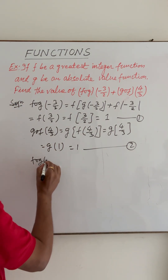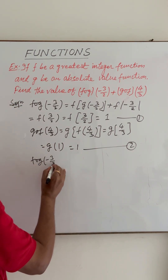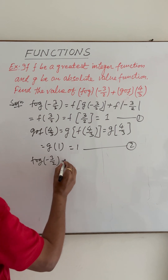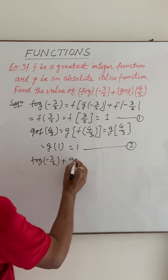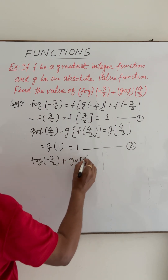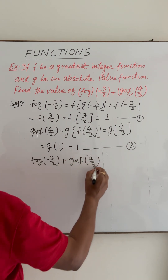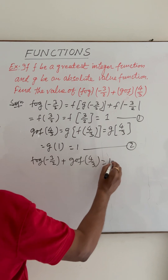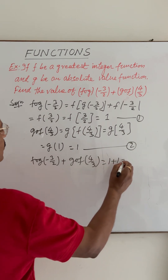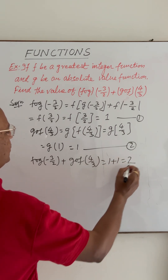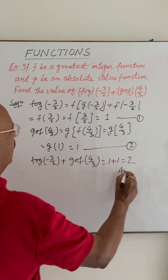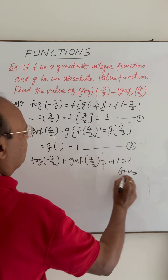Adding the two results, f∘g(-3/2) + g∘f(4/3) = 1 + 1 = 2. This is the answer.